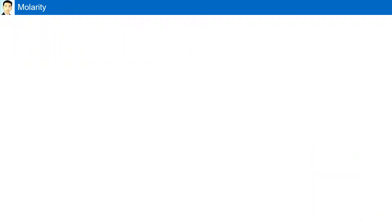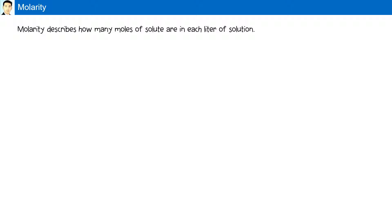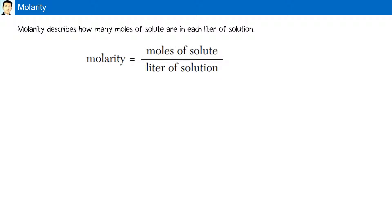Molarity. Molarity describes how many moles of solute are in each liter of solution. In reference table T, molarity is given as the moles of solute over liters of solution. The symbol M is read as molar, or moles per liter.